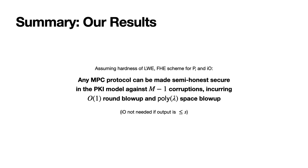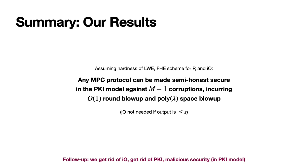To conclude, we improve upon the state of the art in the secure massively parallel computation setting by showing that any MPC protocol can be made semi-honest secure in the PKI model against all but one corruptions, incurring a constant round blowup and a space blowup that's polynomial in the security parameter. We've also done exciting follow-up work: we were able to construct a compiler with the same efficiency parameters achieving all but one semi-honest security without IO and without setup, and also a compiler achieving malicious all-but-one security assuming a PKI. Thank you.